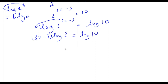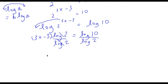To isolate x, I'm going to divide both sides by log 2, moving log 2 to the right-hand side. These two cancel out and I'm left with 3x minus 3 equals log 10 over log 2.